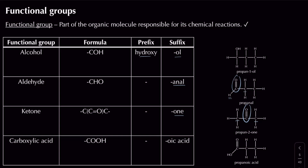Carboxylic acids have a carbon double-bonded to an oxygen, and that same carbon is also bonded to an OH group — together that makes the carboxylic acid functional group. For example, a three-carbon chain with a carboxylic acid group is called propanoic acid. A C=O not at the end of the chain is a ketone — for example propan-2-one. Ignore the numbers for now and focus on the suffix and prefix.